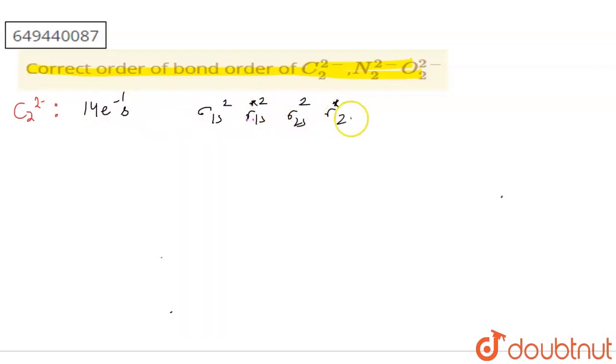...sigma 2s, sigma star 2s, then pi 2px equals pi 2py, sigma 2pz, pi star 2px equals pi star 2py, sigma star 2pz. Now filling 14 electrons: bond order is bonding minus antibonding divided by 2. Bonding electrons are 10, antibonding are 4, so (10-4)/2 = 3.